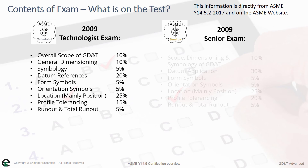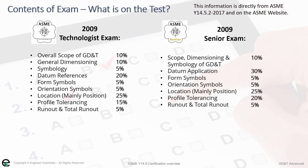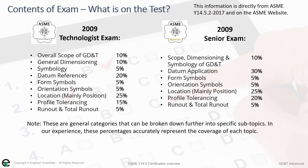For the 2009 senior exam, scope, dimensions, and symbology make up 10%. Datum applications increase to 30%. Form and orientation again make up 5%. Location — mainly position — makes up 25%, and again, it's very rare to find concentricity and symmetry questions. Profile tolerancing jumps up to 20%, and runout and total runout stay at 5%. These are general categories that can be broken down into specific subtopics, but in our experience these percentages accurately represent the coverage of each topic. For instance, with 150 questions on the test, there were exactly 7 or 8 form or orientation symbol questions.